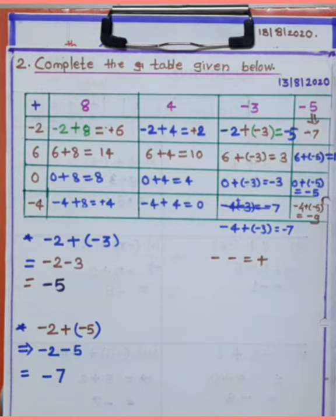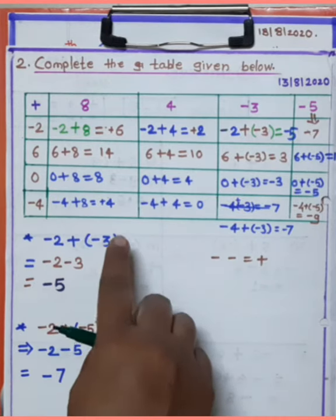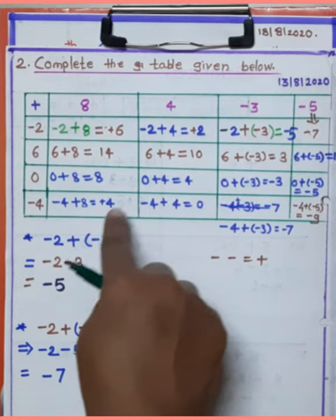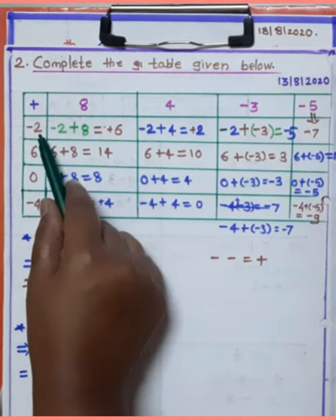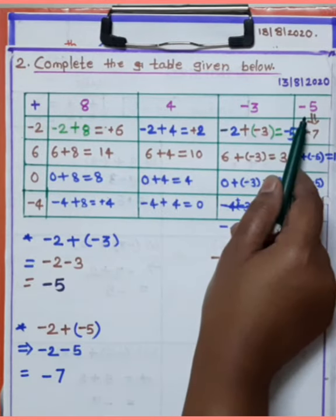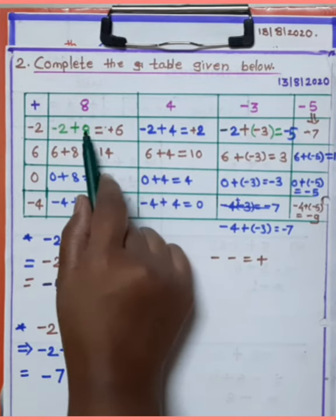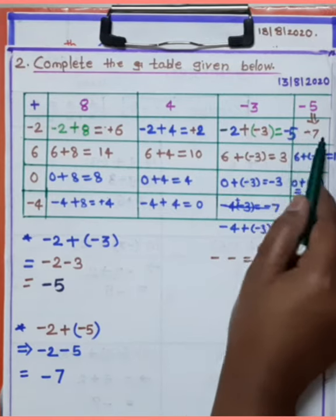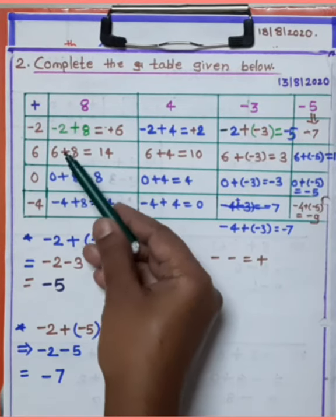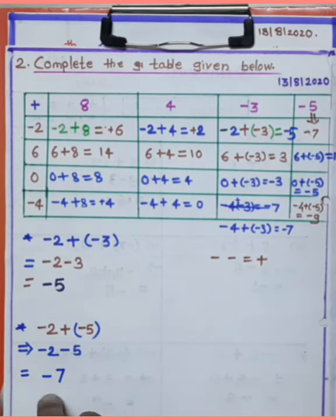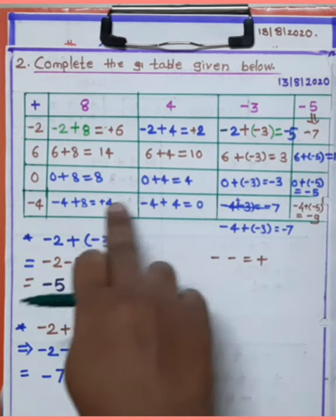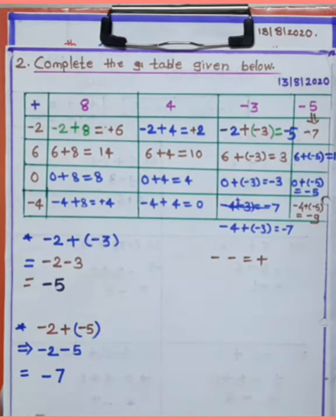Namaste students. Yesterday you learned how to solve problems based upon the addition of integers. The first four examples — 1, 2, 3, and 4 — were covered, and the remaining three column-model examples are solved as homework.